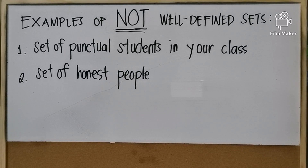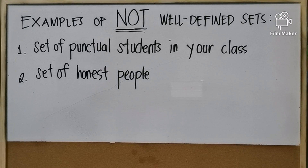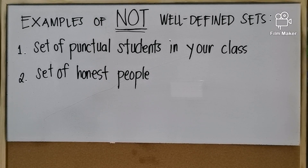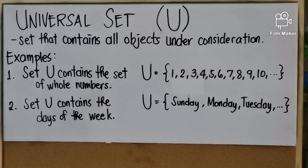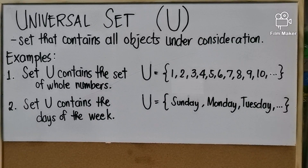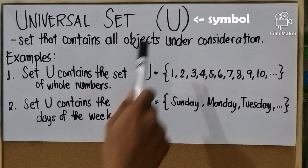We also have examples of not well-defined sets. First, we have 'set of top students in your class,' next we have 'set of honest people,' and many more. The sets given are not well-defined since people will have different points of view on who are the top students and who are honest people.